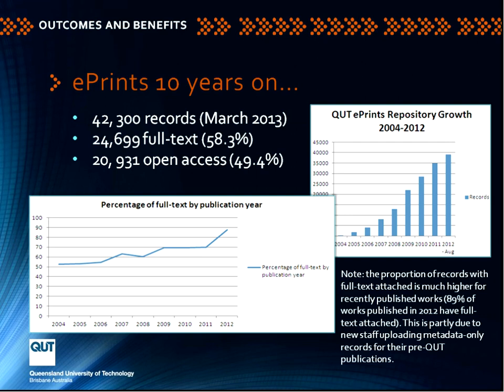How is it looking after 10 years, bearing in mind that we started to accept deposits at the beginning of 2004? We've seen a lift — the number of records you see on screen here. The proportion of records with the full text attached, which is of course the desirable state, is higher for recently published works. In 2012 it reached 89%, which if you're familiar with statistics about institutional repositories, you'll know is a very high figure.